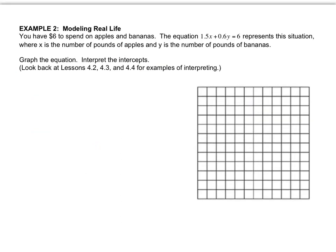Our last one is a word problem. You have $6 to spend on apples and bananas. The equation 1.5x + 0.6y = 6 represents this situation, where x is the number of pounds of apples and y is the number of pounds of bananas. We have to graph the equation and interpret the intercepts.